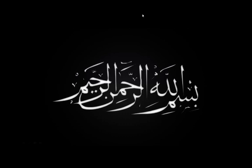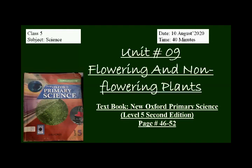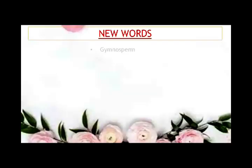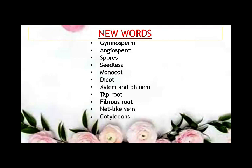Today we are going to start the unit: Flowering and Non-Flowering Plants. You will learn new scientific terms in this unit — gymnosperm, angiosperm, spores, seedless, monocot, dicot, xylem and phloem, taproot, fibrous root, net-like veins, cotyledons, and embryo. These are all the new scientific terms included in this unit.